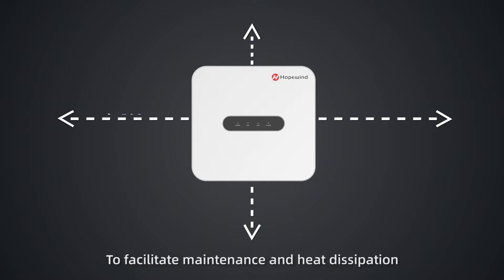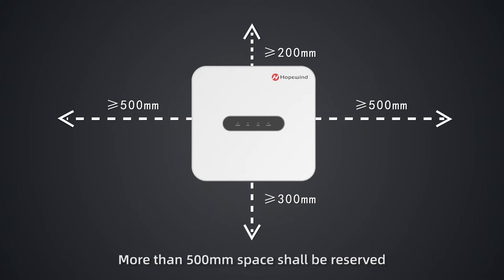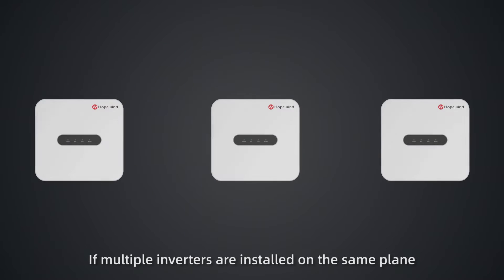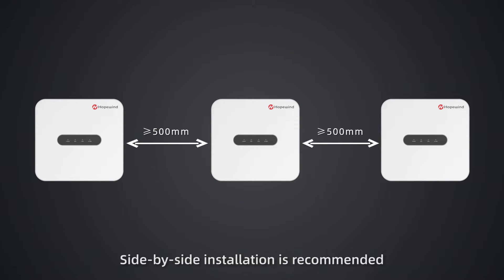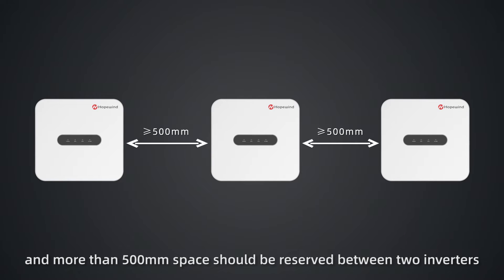To facilitate maintenance and heat dissipation, more than 500 mm space shall be reserved on the left and right of the inverter, and at least 200 mm space above and 300 mm space below the inverter. If multiple inverters are installed on the same plane, side-by-side installation is recommended, and more than 500 mm space should be reserved between two inverters.